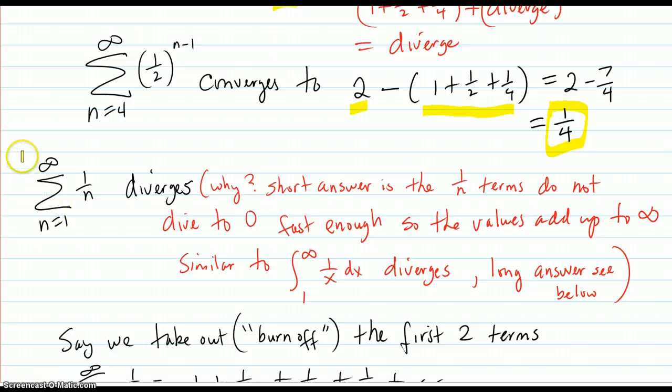Here's another example: the sum from n equals one to infinity of 1/n. That diverges. Why? The short answer is that 1/n terms do not dive to zero fast enough.